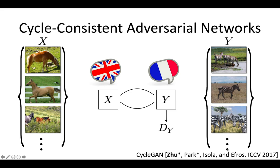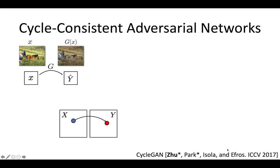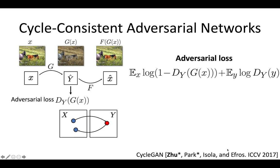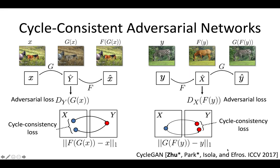Even if we don't know anything about French, we can tell something went wrong if things are not consistent. The same idea applies here: if we translate a horse into a zebra and then translate it back, we should get the same horse we started with. Given input image X, we apply mapping G to translate into domain Y, add an adversarial loss to check if the output looks like domain Y, then apply inverse mapping F to reconstruct X, and simultaneously optimize G and F to minimize the reconstruction loss. We do the same in the opposite direction — we call our method CycleGAN.